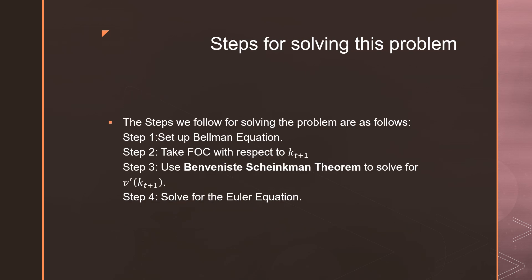So there's four steps for going and doing this. Some people break it down into more steps, but I use four. Step number one is that we're going to set up the Bellman for this sequential problem. Step number two is that we're going to take our first order condition with respect to kt plus 1 in our Bellman.